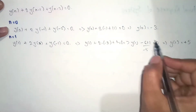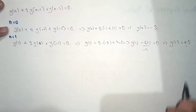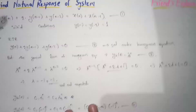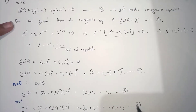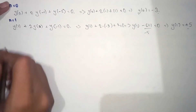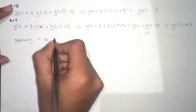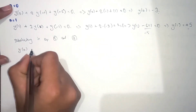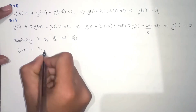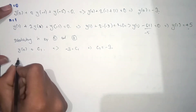So we have two results: y(0) = -3 and y(1) = 5. We substitute these values into the equations for C1 and C2. Let's call these equation 5 and equation 6. Substituting into equation 5: y(0) = C1, so -3 = C1, giving C1 = -3.